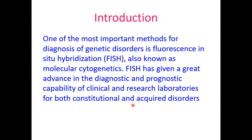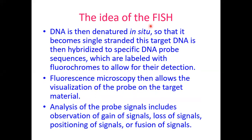The idea of fluorescent in situ hybridization is that we perform denaturation of the DNA so it becomes single-stranded. Then we introduce the probe — single-stranded DNA that hybridizes or binds to a specific DNA probe sequence. The specific probe is labeled with a fluorochrome, and we use a fluorescent microscope for visualization.